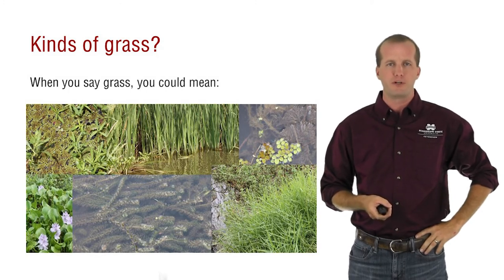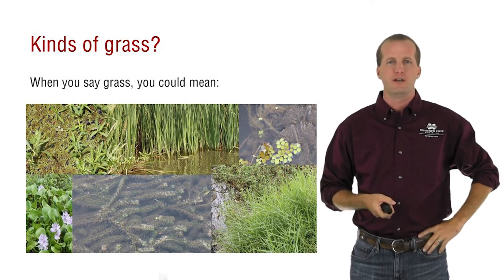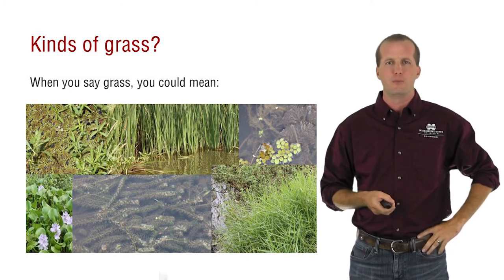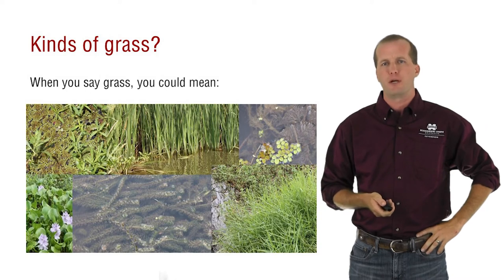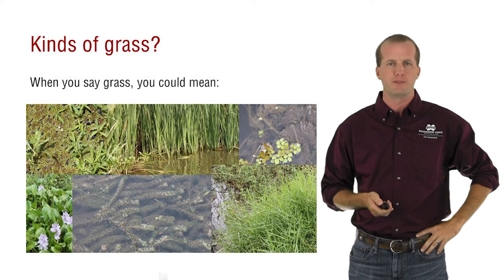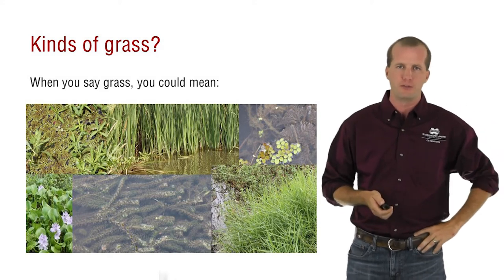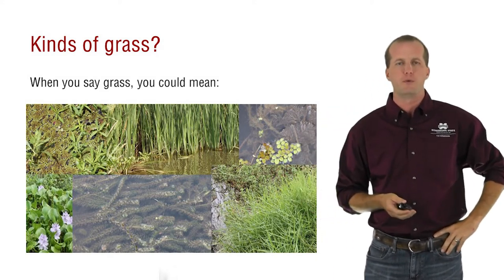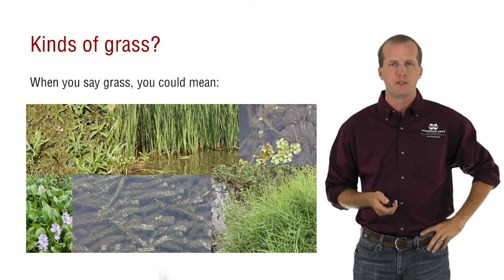Here in the top left image we have some Polygonum species and a few aquatic ferns. In the top center image there you have cattail, which can look like a grass species. On the top right there you have a submerged species as well as that aquatic fern again. The bottom left is a floating species — that's actually the number one aquatic weed in the world. That's water hyacinth.